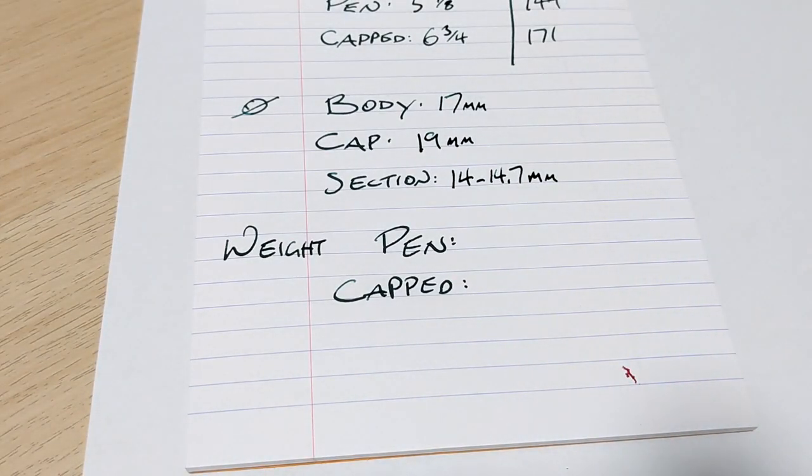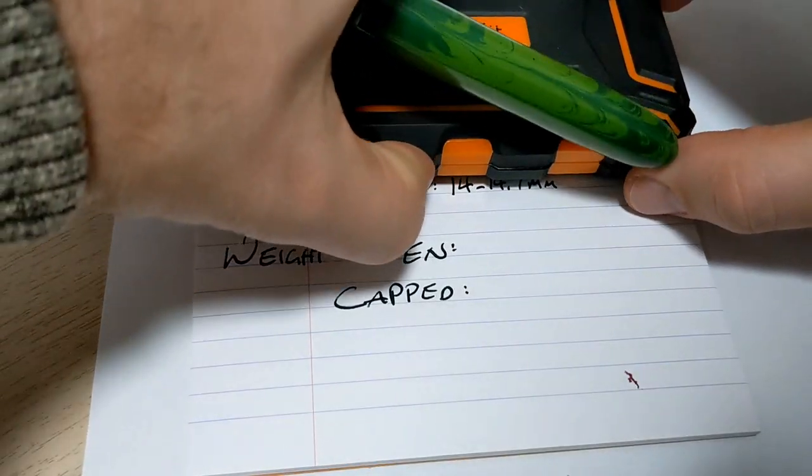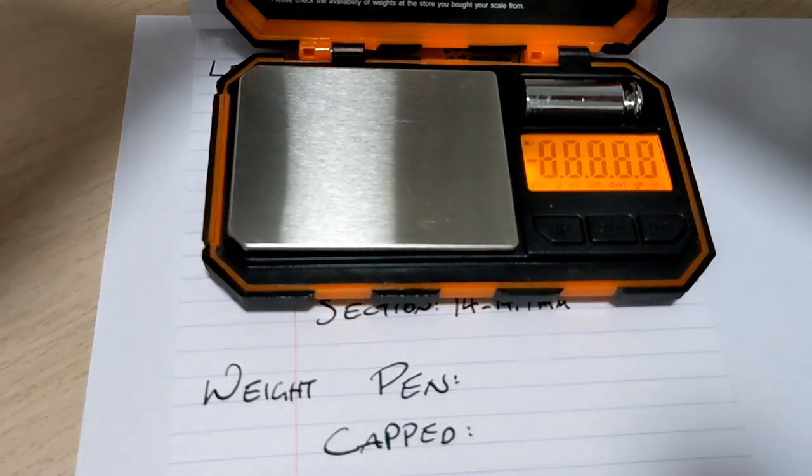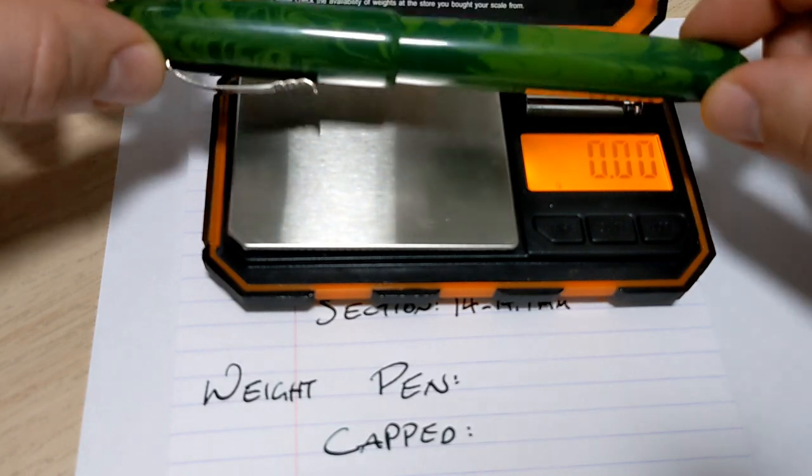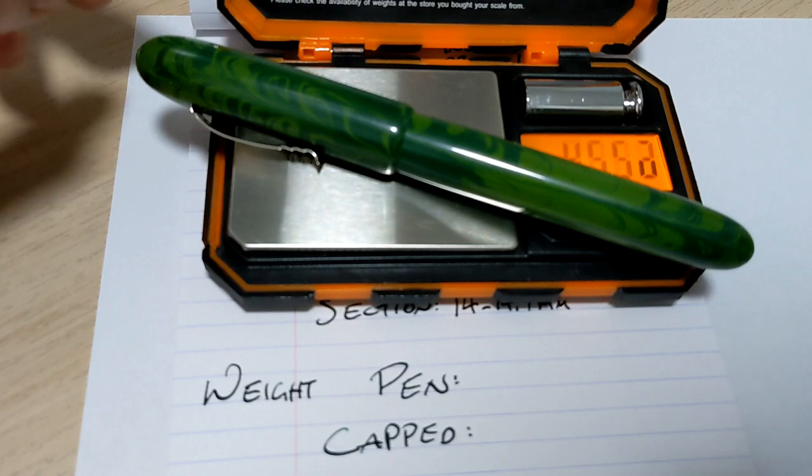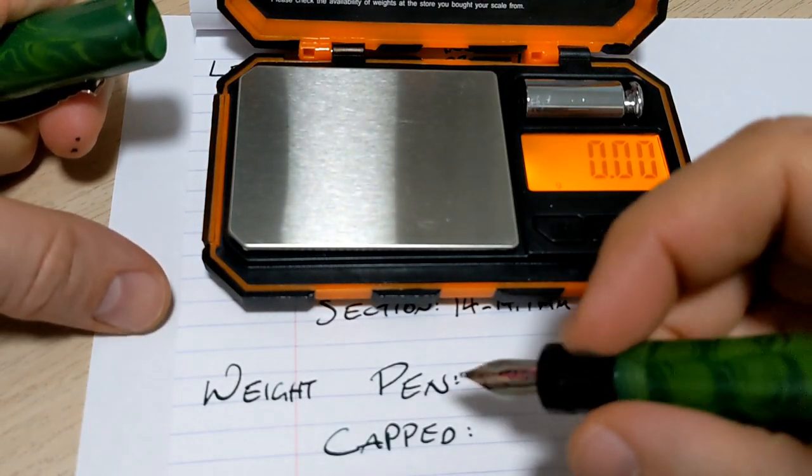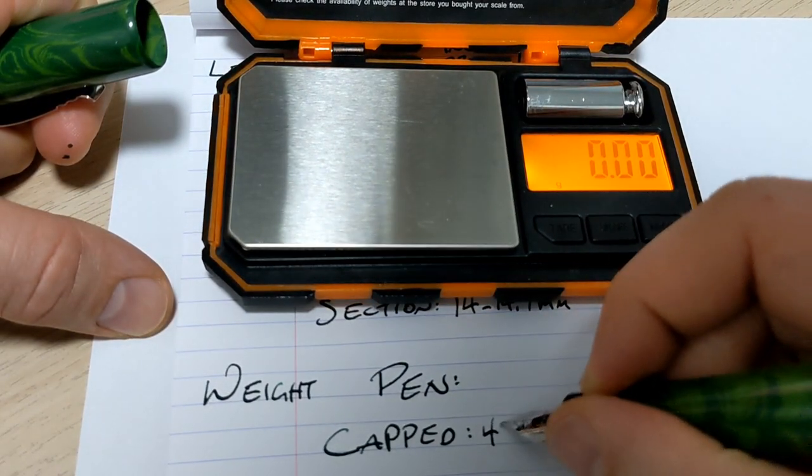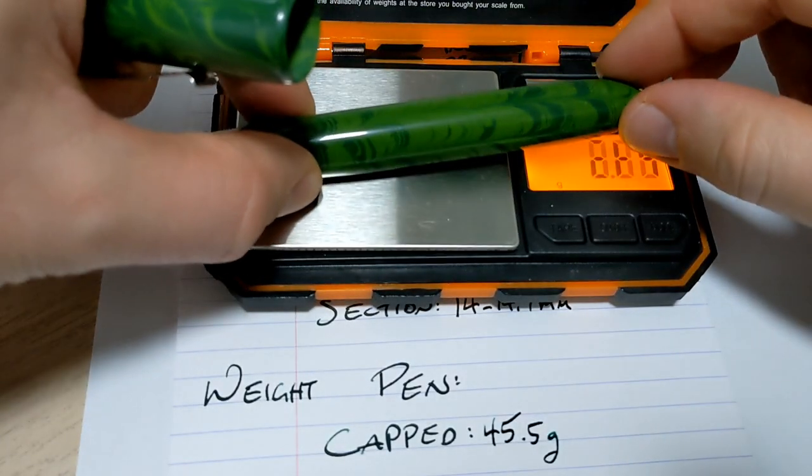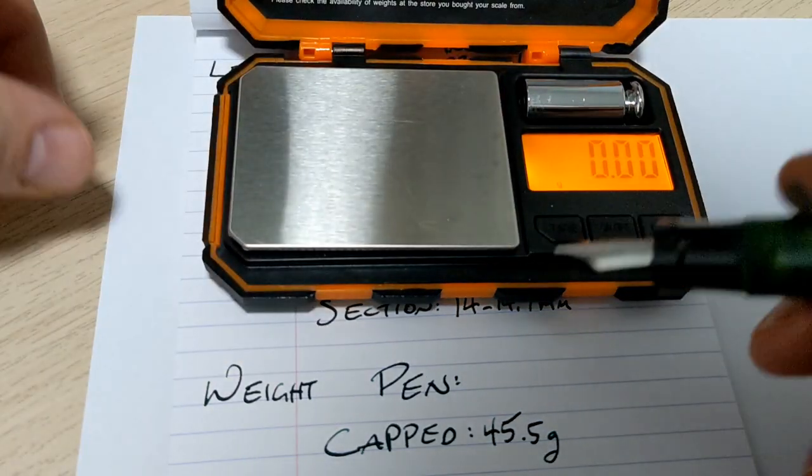The weight of the pen, let's do that live, make it exciting. So the whole pen itself capped, it's just so giant. So 45 and a half grams, that's with ink and it holds about two millimeters of ink. And just the pen body, let's just call it around 30 grams.